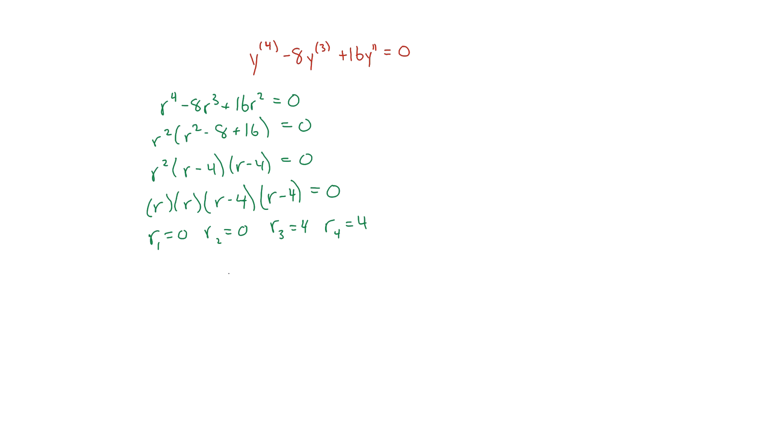When we write the general solution for each repeated term, we multiply by a power of x. So if there are two repeated solutions like in this one, we'll write the general solution for the first one like how we usually do it, and then for the second one we write the general solution how we usually do it times x.